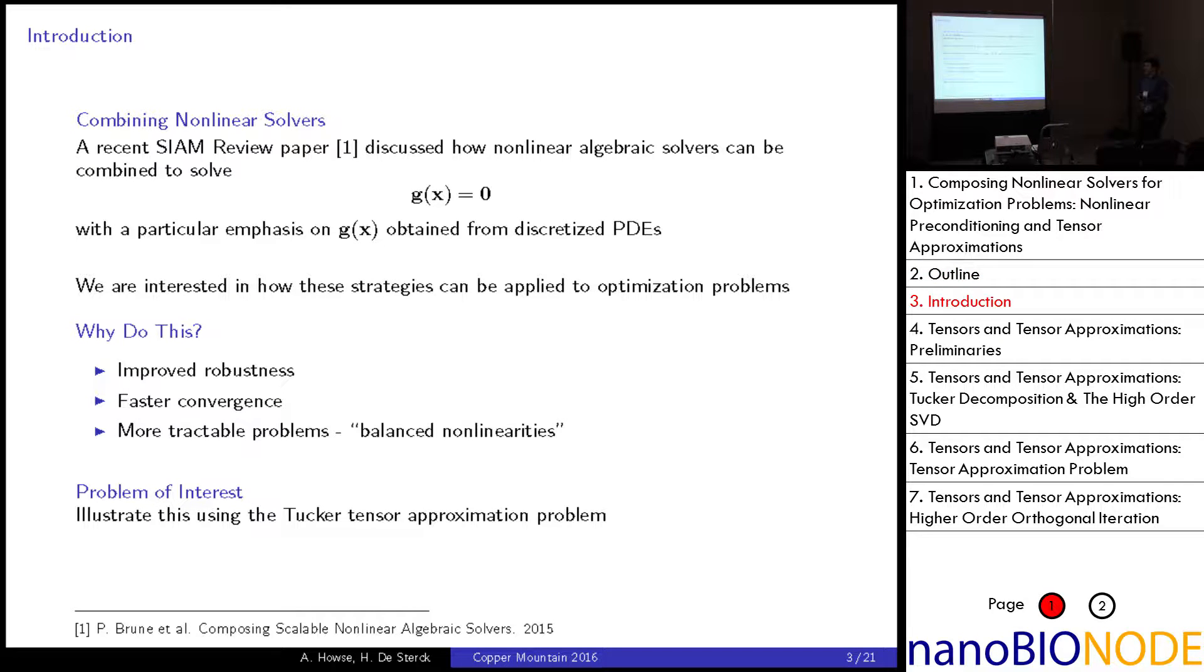So as some of you may have seen in a recent SIAM review paper, not in the current issue but the one previously, there was an article discussing how nonlinear algebraic solvers can be combined to solve a nonlinear system of equations g of x equals zero. And in this paper there was a particular emphasis on problems that were obtained from discretizing PDEs and my supervisor and myself were more interested in the case of how these strategies can be applied to optimization problems. There's a number of different reasons why we can do this. The most obvious would be that it can improve robustness, it can offer faster convergence, and it may also offer a more tractable problem that we can work with. This is related to the idea of offering more balanced nonlinearities. And as I mentioned previously, the problem of interest for myself is the Tucker tensor approximation problem.